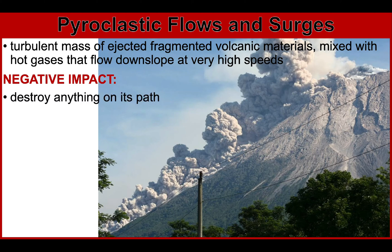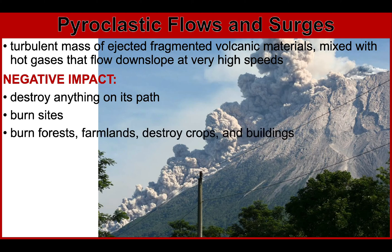Pyroclastic flows can destroy anything in their path by direct impact. They can burn sites with hot rock debris, burn forests, farmlands, destroy crops, and buildings. Deadly effects include asphyxiation, burial, incineration, and crushing from impacts. The only effective method of risk mitigation is evacuation prior to such eruptions from areas likely to be affected by pyroclastic density currents.